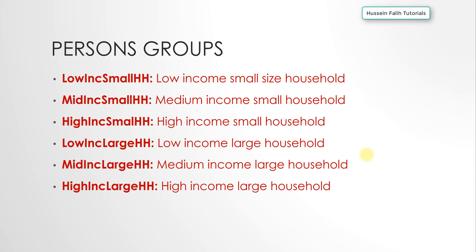For person groups, we classify people based on factors such as income level and household size. People with different incomes behave differently. For instance, on a road with a toll gate, people with higher income would likely use that road while people with lower income would prefer roads without tolls. That's one reason we need to segment our demand.